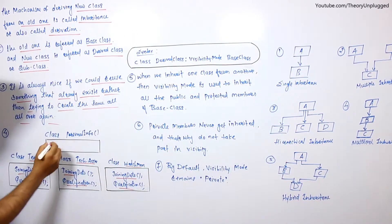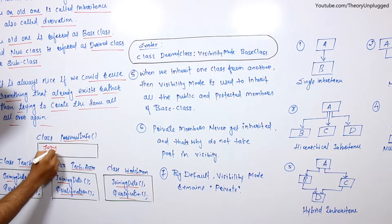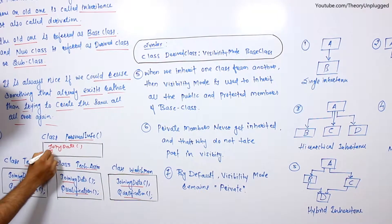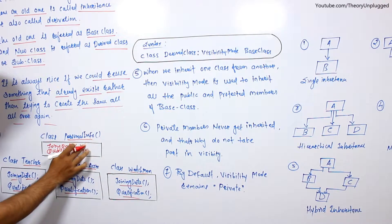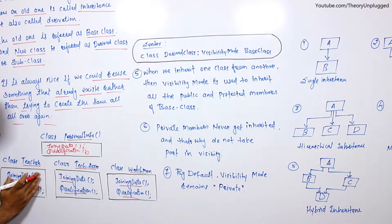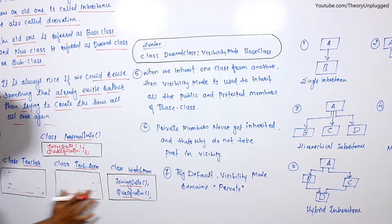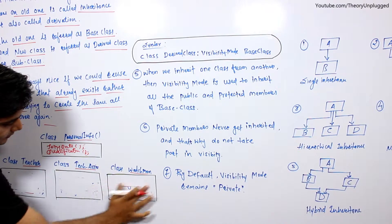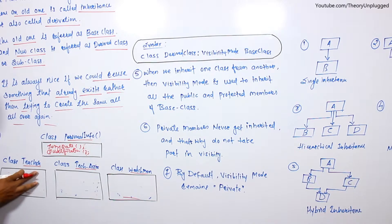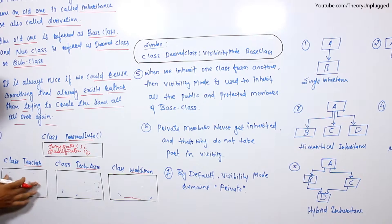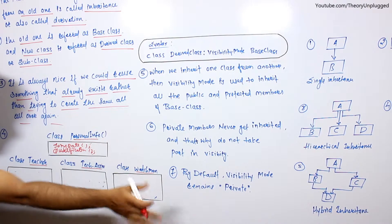तो हम क्या करेंगे — हम एक Personal Info का एक class बनाएंगे, उसमें joining date और qualification को डाल देंगे और यहां से सब चीज़े हटा देंगे। अब यहां पर हमें जो required information है यहां से ले लेंगे। Teacher की कुछ अलग information यहां से लेंगे, Technical Assistant की कुछ अलग information यहां से लेंगे, Watchman की कुछ अलग information यहां से लेंगे।